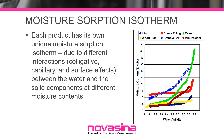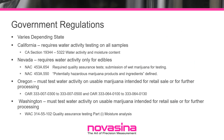Water activity is an intensive property that provides the energy of the water in a system. Moisture content is an extensive property that determines the amount of moisture in a product. Water activity and moisture content, while related, are not the same measurement. Moisture content is typically determined through loss on drying as the difference in weight between a wet and dried sample. While useful as a measurement of purity and a standard of density, moisture content does not correlate as well as water activity with microbial growth, chemical stability, or physical stability.